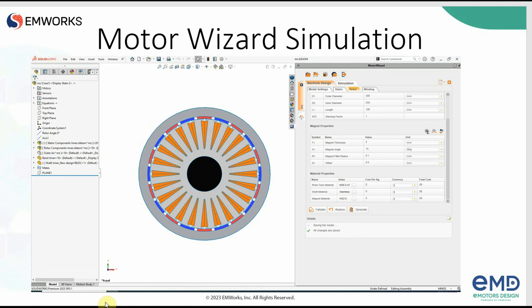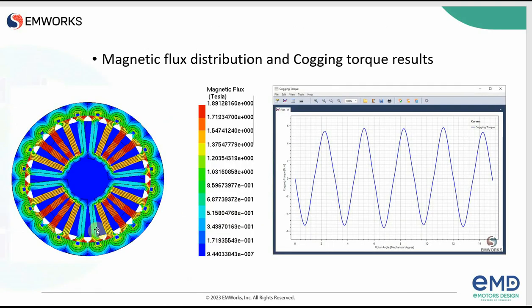Now let's see the initial results from the Motor Wizard simulation. We can see the cogging torque as we move the rotor without any excitation, and the field distribution on the stator and rotor. We can see there is no saturation in the rotor back iron and stator back iron, but there is some saturation on the teeth. So we need to consider whether to choose another magnet type or increase the tooth width — that's why having simulation results on the initial design is very useful.